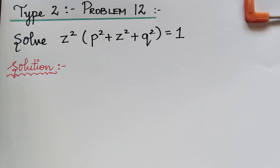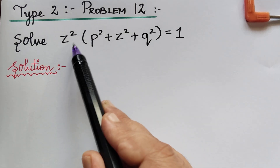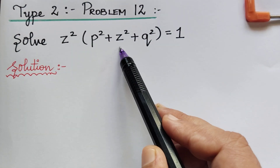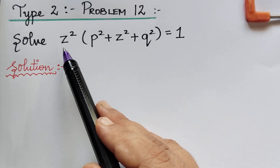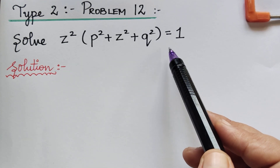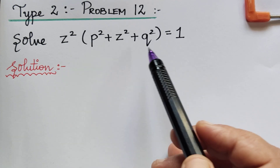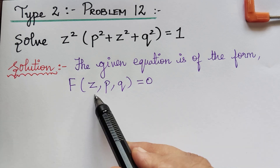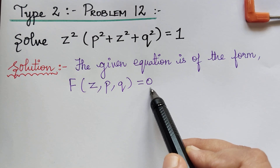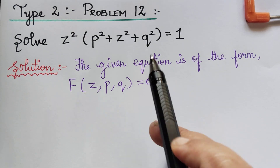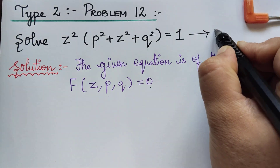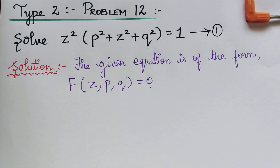Dear students, under the topic non-linear partial differential equations, here we have problem 12 under standard type 2. The question is: solve z squared multiplied with p squared plus z squared plus q squared is equal to 1. We observe that only z, p and q are present explicitly in this equation, so this equation is of the form F(z, p, q) = 0. Let us mark this as equation 1.